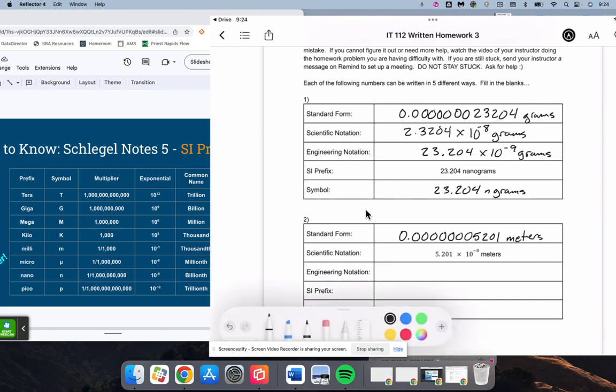And then in engineering notation, we will go in swoops of three to the right. So three, six, nine. And so we're going to have 52.01 times 10 to the negative nine meters.